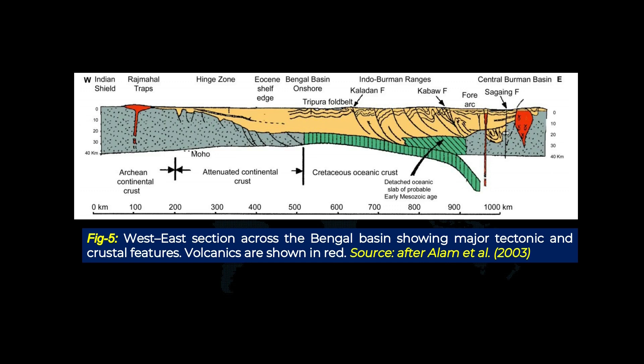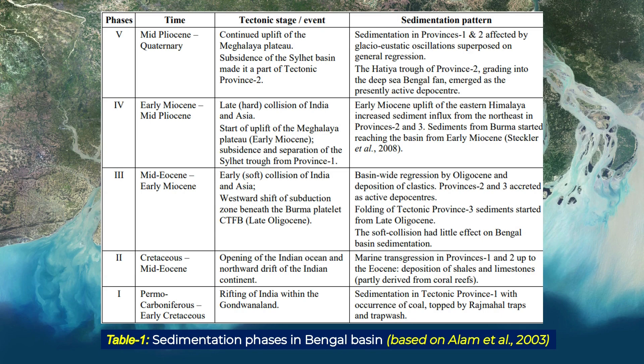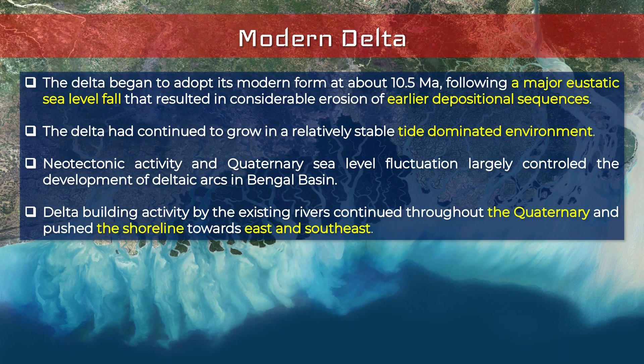Here is the east–west cross-section of the Bengal Basin for a better understanding of the major tectonic and crustal features. From this chart we can see that sedimentation phases are divided into five phases: the first two phases occurred before the collision, phases three and four occurred during and after the collision, and in phase five a major eustatic sea level fall occurred and the delta continued to grow in a relatively stable, tide-dominated environment.